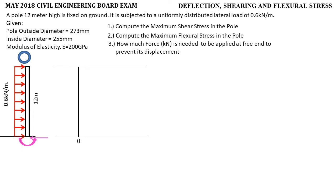Starting from zero shear, due to the reaction, the shear rises — that is equal to 0.6 times 12, which is 7,200 N. Then, subtracting the downward forces — since going left side is positive and going right side is negative — from 7,200 we subtract 0.6 times 12, giving 0 at the free end. Since the load is uniform, the degree of the shear curve is a first-degree curve.